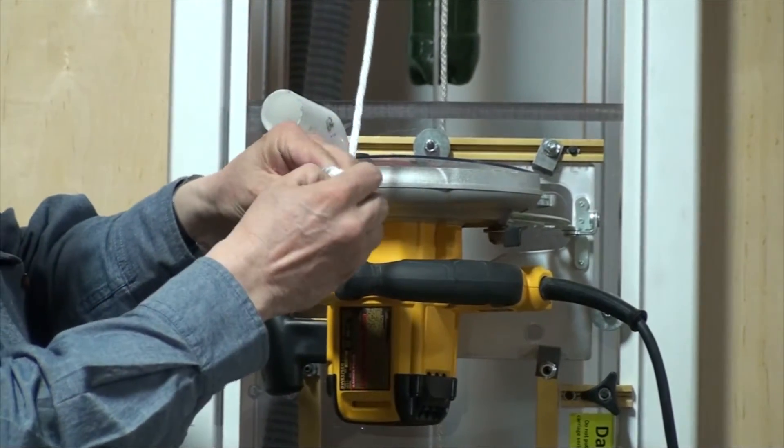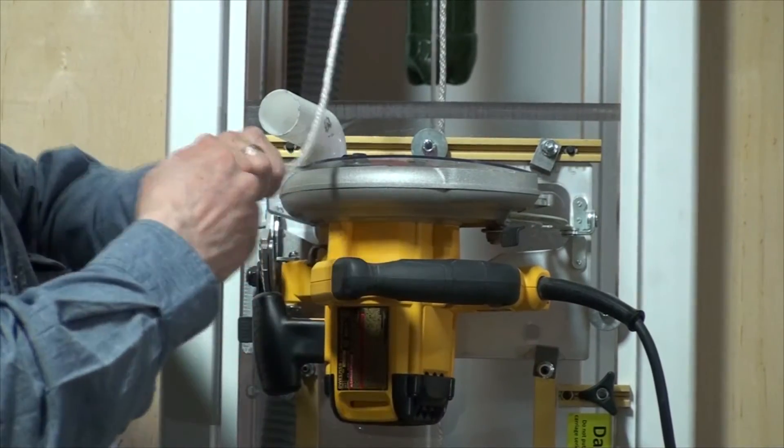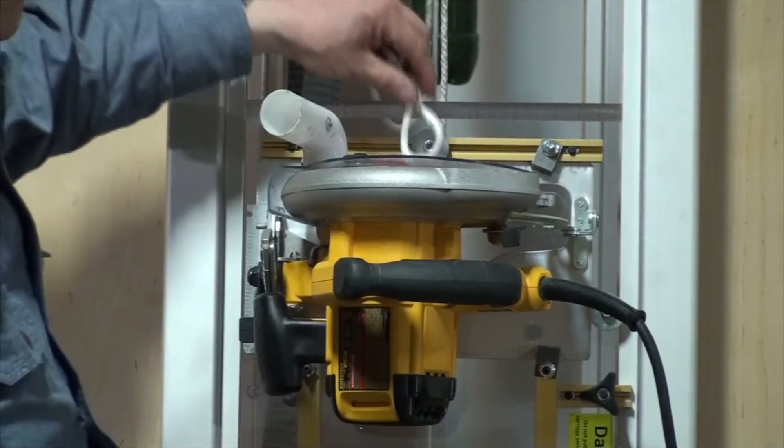Every time you change from rip to crosscut or crosscut to rip, vice versa. You grab it with your hand and cables tend to have a sharp surface.